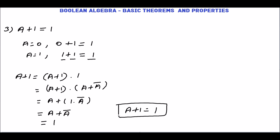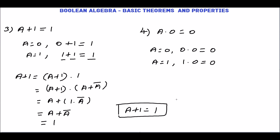The next theorem is a · 0 = 0. If a = 0, then 0 · 0 = 0 — in the AND operation, both inputs are 0 so the output is 0. If a = 1, then 1 · 0 = 0. We have already proved a + 1 = 1, and based on the duality principle we can directly derive a · 0 = 0.